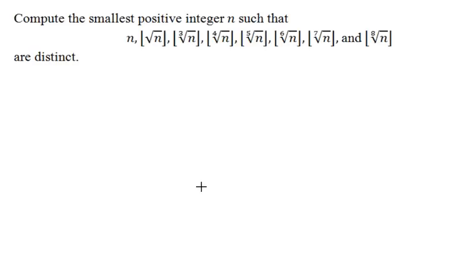Here is a view of the problem. We would like to compute the smallest positive integer n such that each of these eight expressions are actually distinct integer values, because the floor functions here are all going to give rise to integer values.